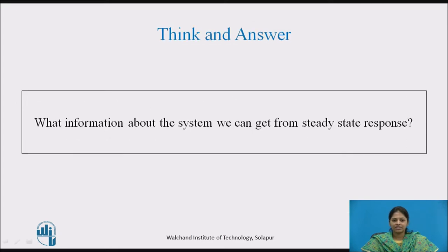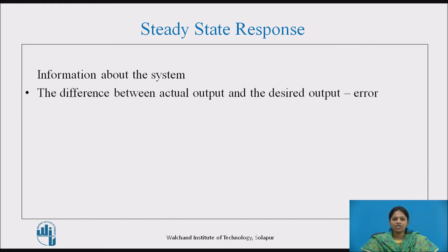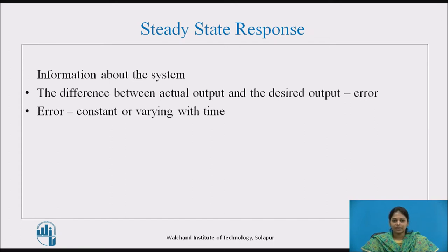Try to think and answer: what information about the system can we get from the steady state response? From the steady state response, we can get the following information: how far the system output is from its desired value, which indicates the error; and whether this error is constant or varying with time.